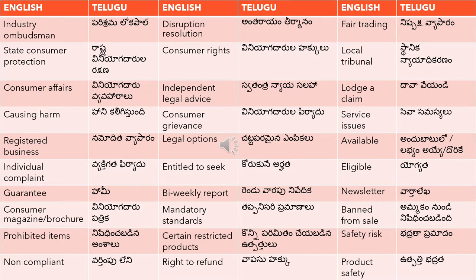Regarding the word 'available' — sometimes I've been asked that certain words are translated incorrectly, but it depends upon the context. A particular word can be translated in two or three ways depending upon the context of the dialogue. So you won't blindly use the word — you have to understand the context and use it accordingly. For example, 'available' can be translated as 'andubatuloondo', 'andubatlo leka', or 'labhyam ayye', depending on context.